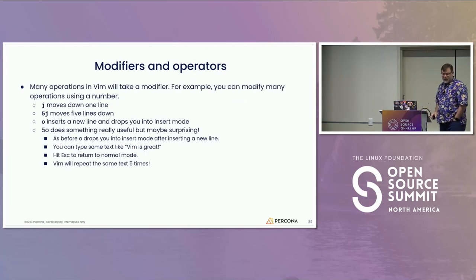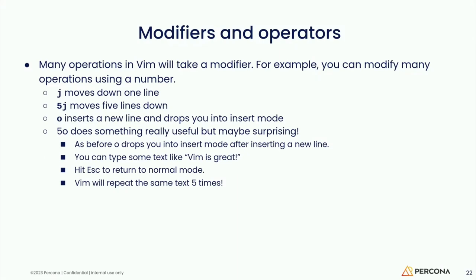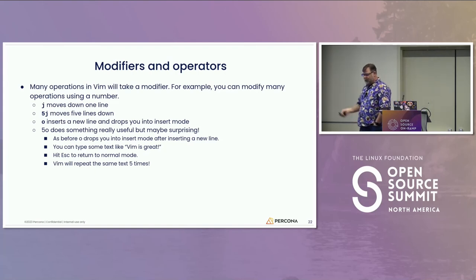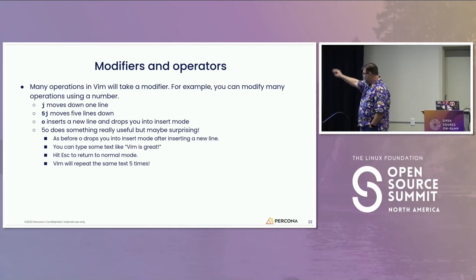Modifiers and operators. One of the neat things about VIM is that its commands are composable. As you learn VIM and use it regularly, you start finding you can chain things together. J will move you down one line, but 5J will move you five lines down. You can also use O to drop a new line and enter insert mode. But 5O will drop you into insert mode, you type something, hit Escape, and it does it five more times.